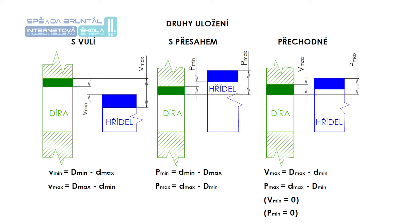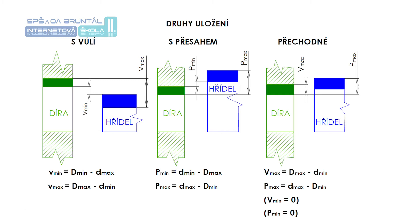Lícování lze u funkčně vázaných ploch dosáhnout buď jistého stupně volnosti vzájemného pohybu součástí, nebo naopak zaručit jistý odpor nutný k jejich spojení a rozebrání. Tento vzájemný vztah se nazývá uložení. Velikosti tolerancí i uložení jsou předepisovány pomocí horních a dolních mezních úchylek. U združených ploch se podle vzájemné polohy tolerančních polí rozlišují tři základní skupiny uložení – volná, pevná a přechodná.